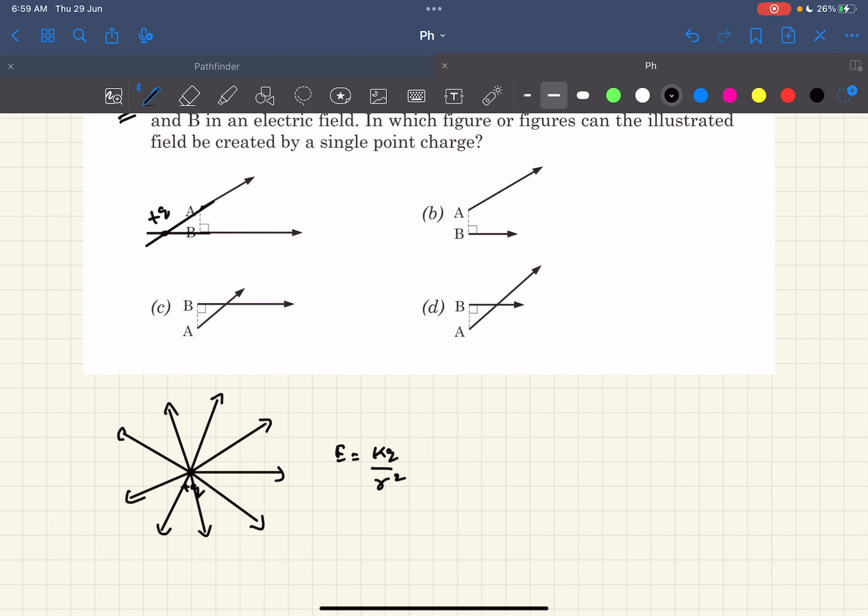Now the distance of point B from the charge Q is less than distance of point A from the charge Q, which means the electric field at A must be less than electric field at B. A is clearly a possible case because the length of A vector is smaller than the length of B vector.